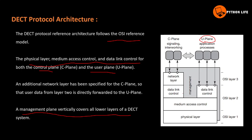The management plane covers the network layer, data link control, medium access control, and physical layer through data transmission. Data link control handles general data link control on both sender and receiver sides.